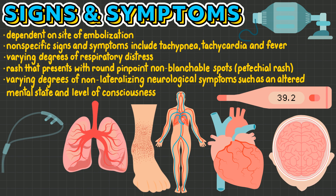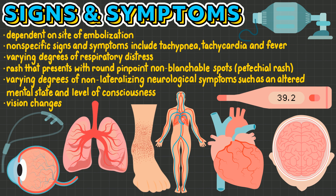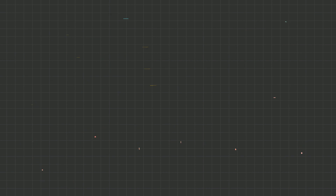When the brain is involved, it may present with varying degrees of non-lateralizing symptoms such as an altered mental state and level of consciousness. And if the eyes are involved, fat embolism syndrome may present with vision changes.